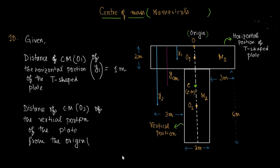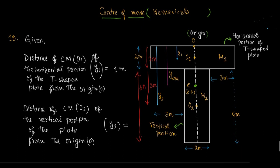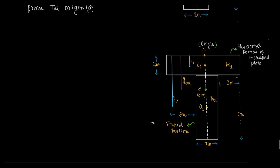The distance of center of mass O2 of the vertical portion from the origin O is y2. The height of the horizontal portion is 2 meters, and the distance of center of mass O2 of the vertical portion from its lowest point is 3 meters. The height of the vertical portion is 6 meters. So y2 equals 2 meter plus 3 meter, therefore y2 is equal to 5 meters.